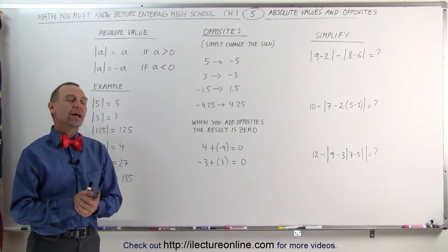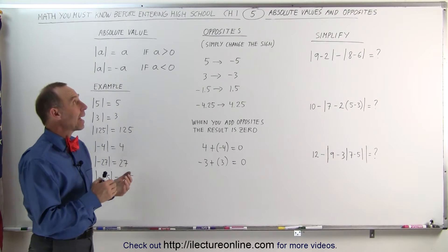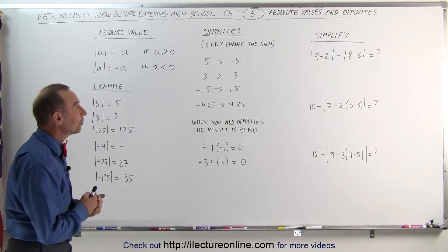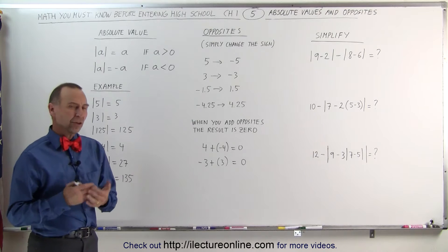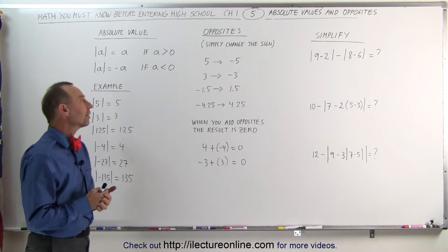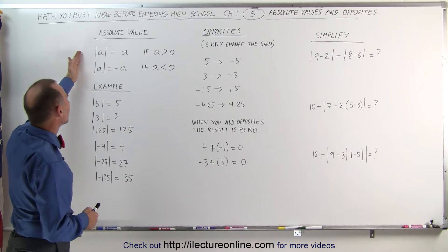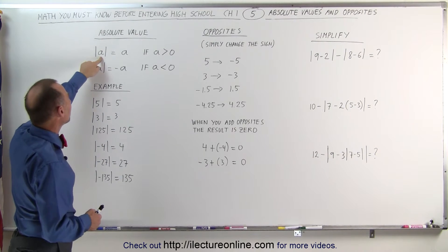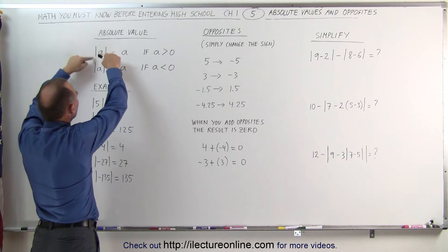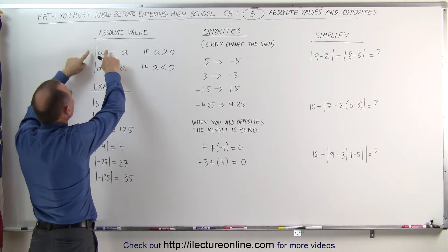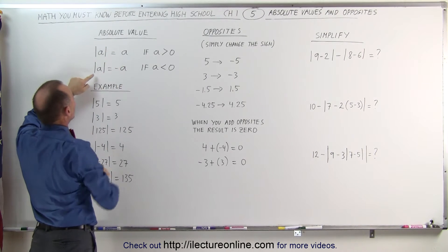Welcome to ElectronLine. Now let's talk about absolute values and opposites. Starting with absolute values, this is the basic definition. If you have a number and you put those little lines next to it, this means the absolute value of that number.